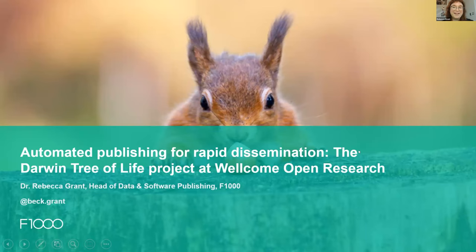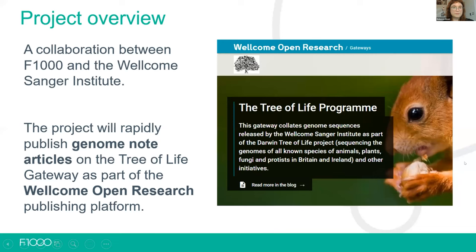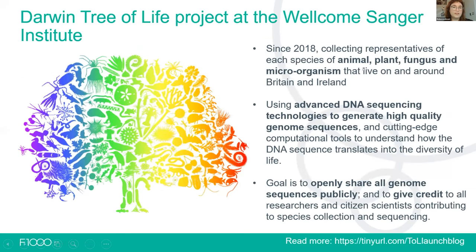Thank you so much. So thank you for inviting me to speak about this project — it's going to be a whistle-stop tour of what we're doing. It's a collaboration between F1000 and the Wellcome Sanger Institute, and the aim of the project is to rapidly publish genome note articles on the Tree of Life gateway as part of the Wellcome Open Research platform. I'm going to be talking about why this is interesting or maybe a little bit unusual, and firstly to introduce you to Darwin Tree of Life at the Sanger Institute.